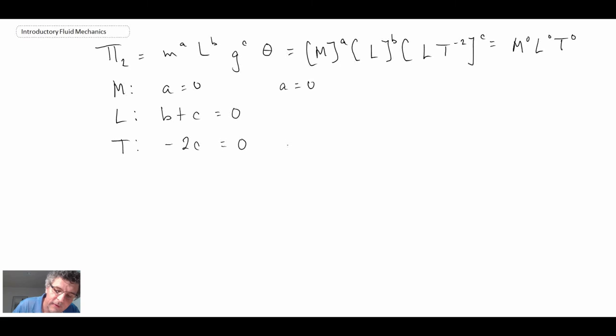We're getting A equals 0, C equals 0, and B equals 0. So this is an interesting one. What we end up with is pi 2 is just equal to theta. And not 0, theta. There we go. And that is dimensionless because we said it was. So that checks out.